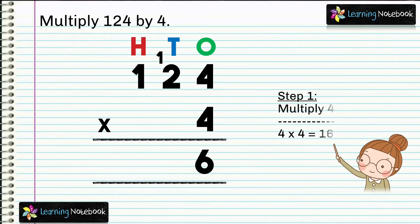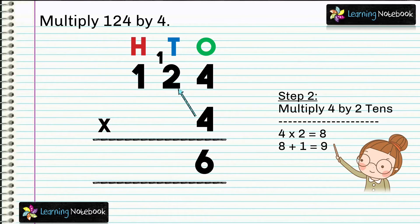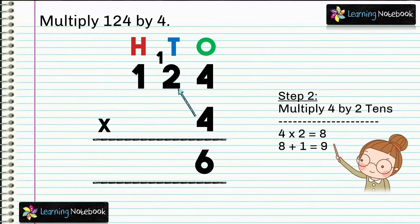Now in step 2, multiply 4 by 2 tenths. 4 into 2 equals to 8. But please note, we also have 1 as carry due to regrouping in step 1. So what to do with this carry at tenths place? We will add it. 8 tenths plus 1 carry equals to 9 tenths. So write 9 in the answer.